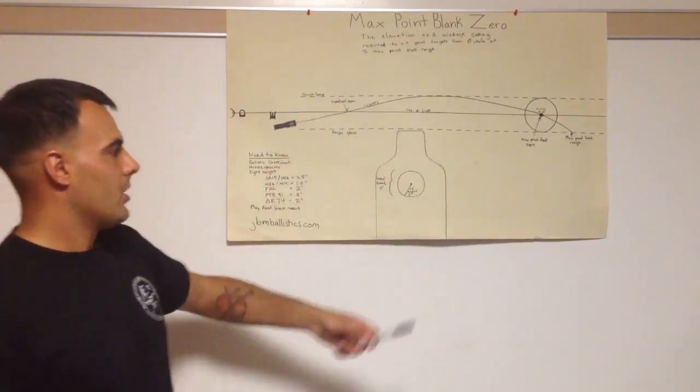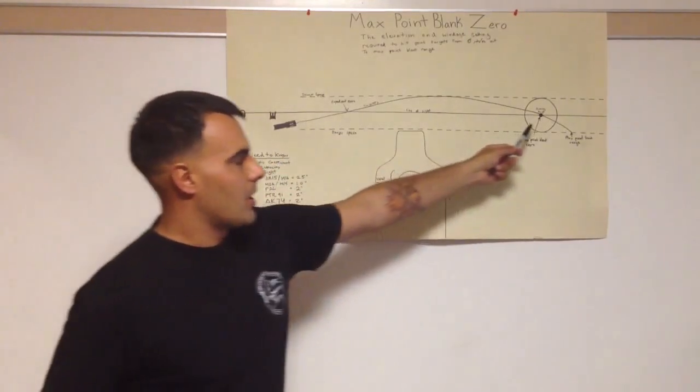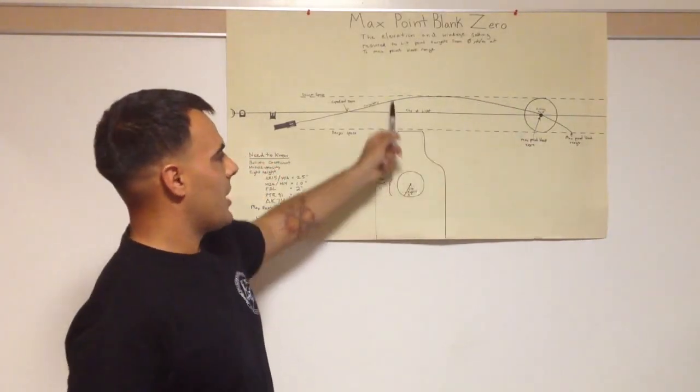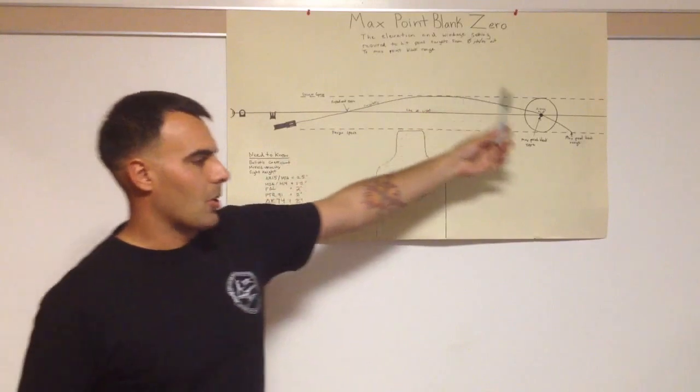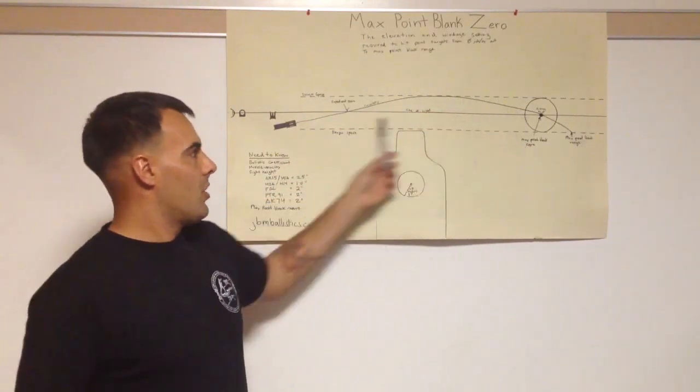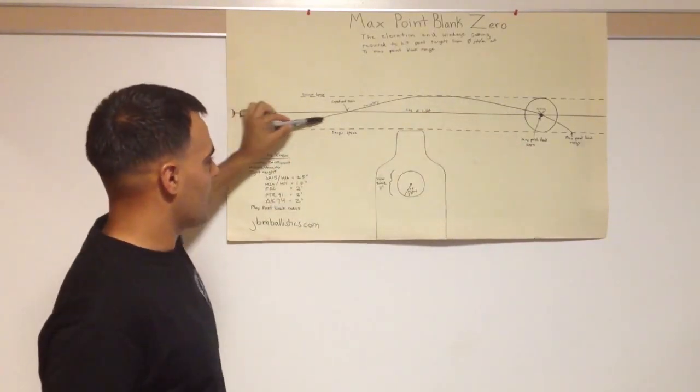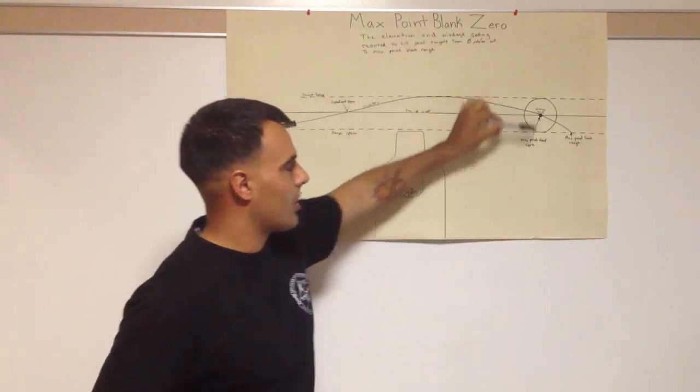This diagram here, we have our vital zone. This dotted line is danger space, and danger space is an area from the muzzle out to our target where the vital zone will be hit by some part of our cone of fire, which is around our trajectory.